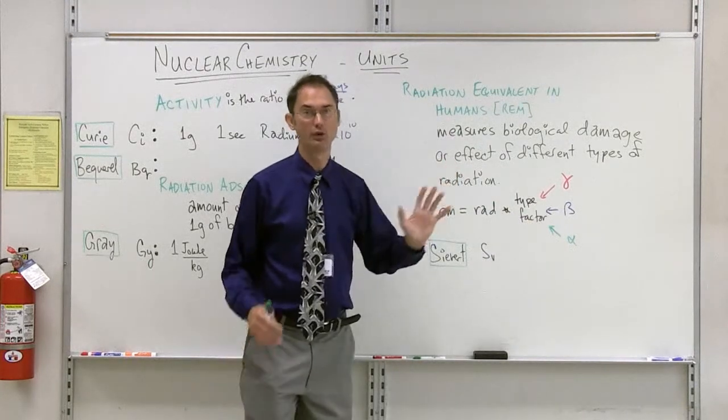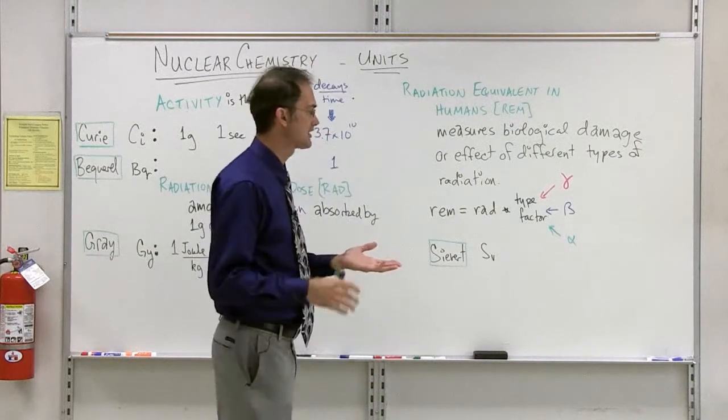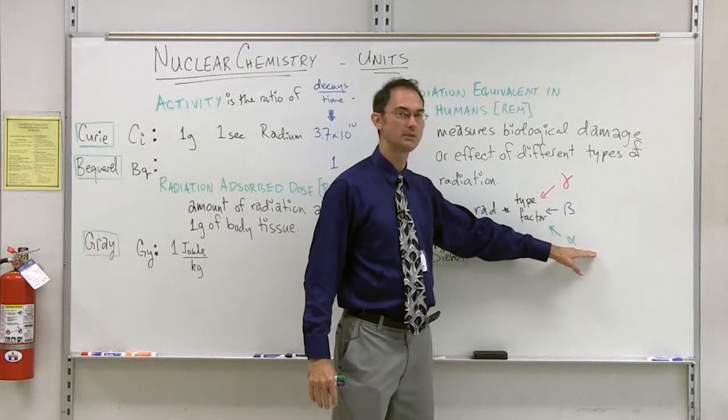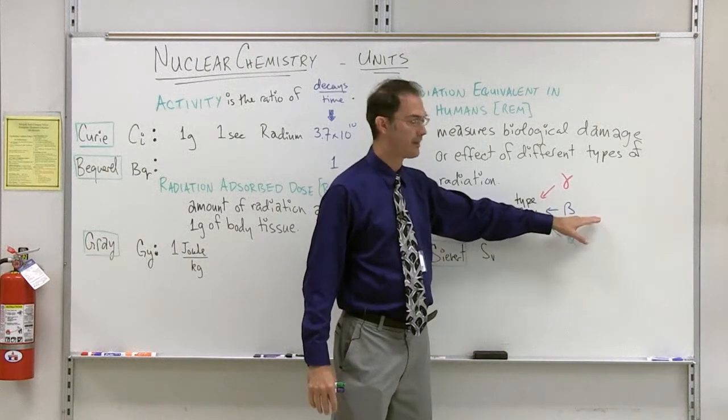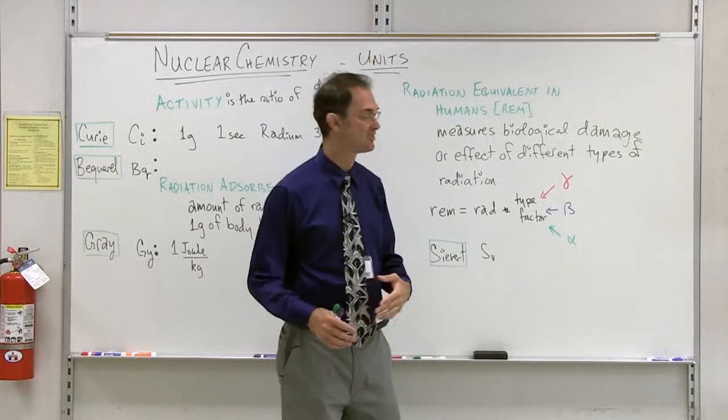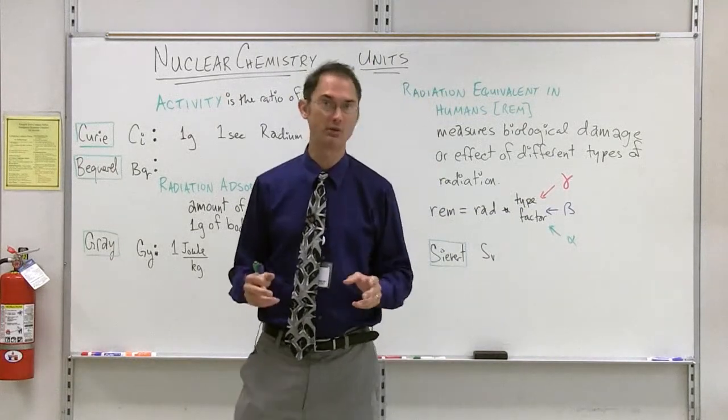You see, the REM does its best to put apples, oranges, and bananas on an equal footing. In this case, we have alpha radiation, which is rather soft and doesn't get absorbed much by the body. We have beta radiation, which does get absorbed somewhat by the body and is dangerous. And then finally gamma radiation, which does a significant amount of damage.